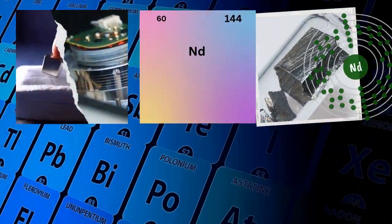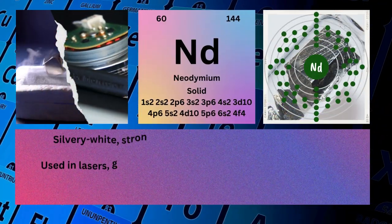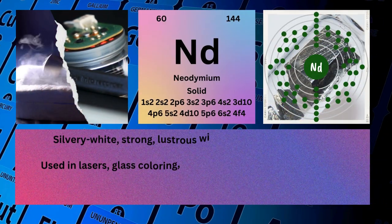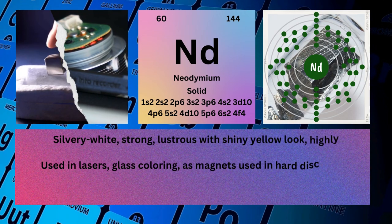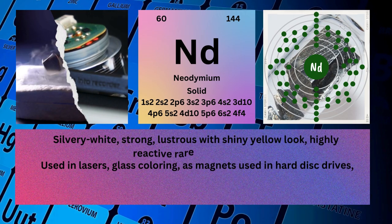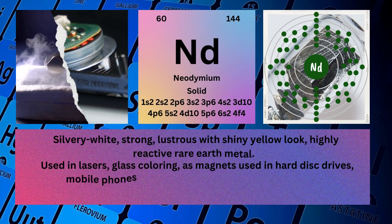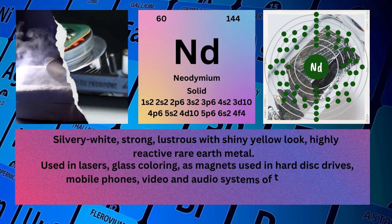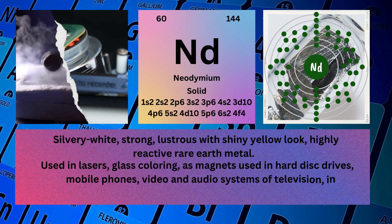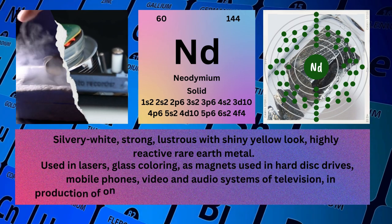Neodymium. Atomic number: 60. Mass number: 144. Symbol: Nd. State: Solid.